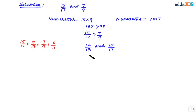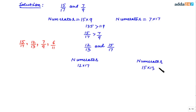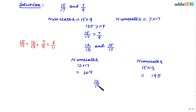Now let's make the denominators the same for 12/13 and 15/17. The numerator for 12/13 becomes 12 × 17 = 204, and the numerator for 15/17 becomes 15 × 13 = 195. Since 204 is greater than 195, we can say that 12/13 is greater than 15/17.